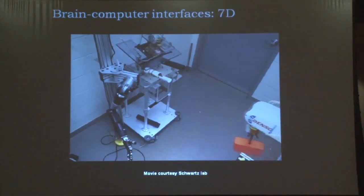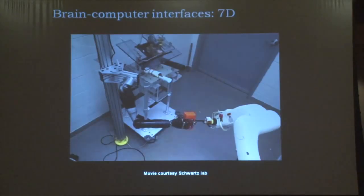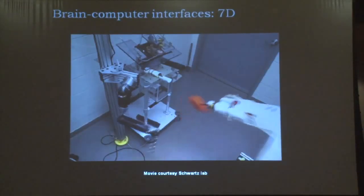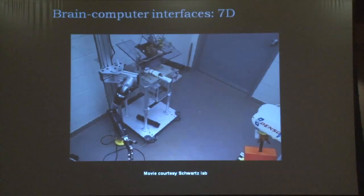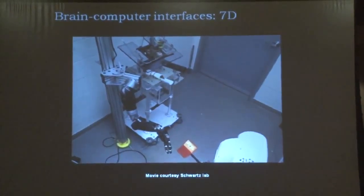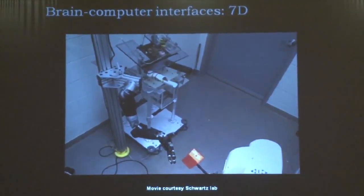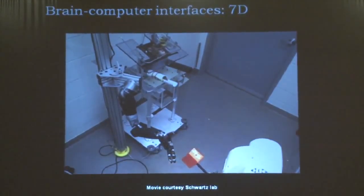This is a movie from Andy Schwartz's lab, where a monkey is controlling a seven-degree-of-freedom robotic limb — controlling the three-dimensional endpoint position of the limb, orienting the wrist in three degrees of freedom with flexion, extension, abduction, adduction, and rotation, and also controlling the finger gripper. He uses that limb to grab a target presented in various locations.